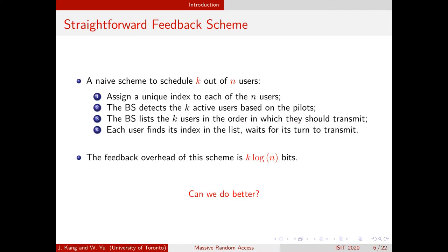Let's examine a naive scheme for feedback. First, assign a unique index to each of the n potential users. Each user sends their pilot message and the base station determines which K users are active. As feedback, the base station lists the indices of the K active users in the order in which they should transmit, and each user transmits in the order listed. Since each index requires log n bits, listing all K users leads to a feedback cost of K times log n bits. We ask: can we do better than this?